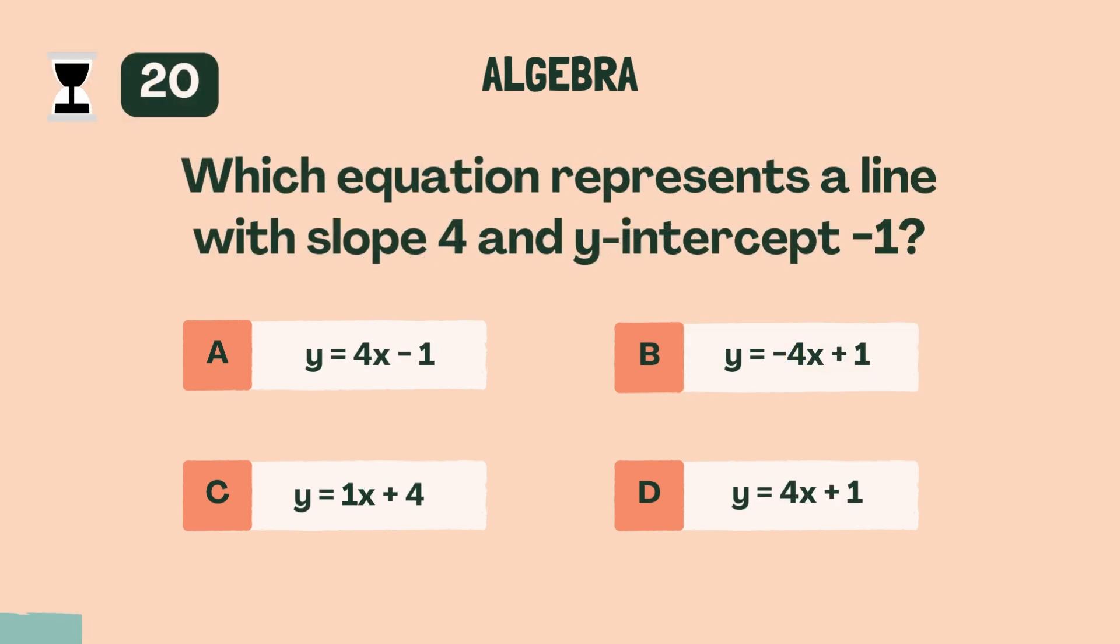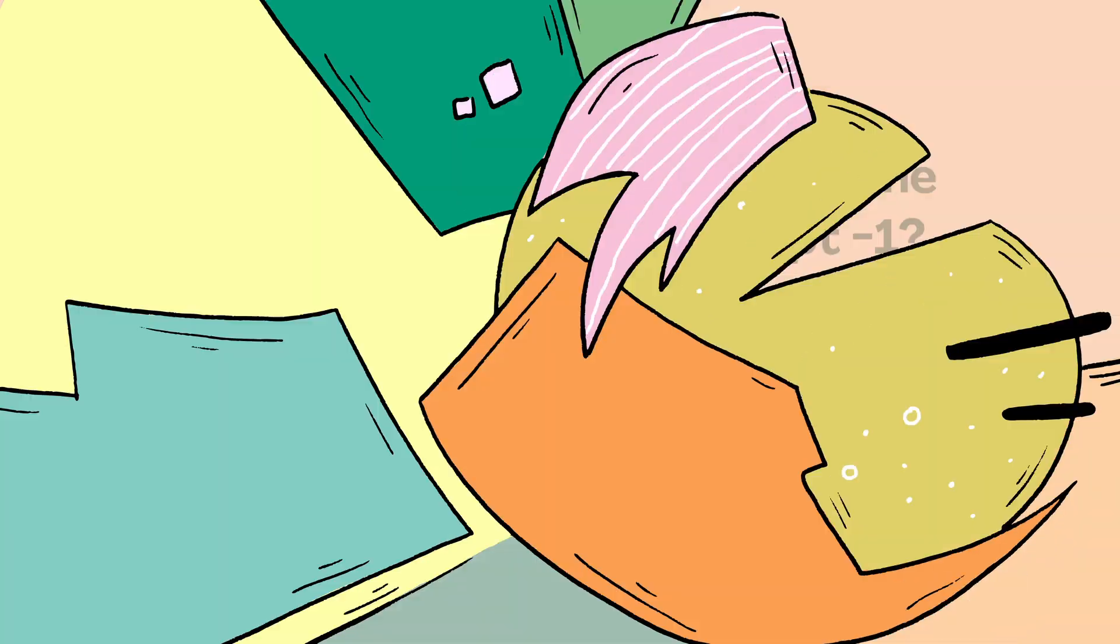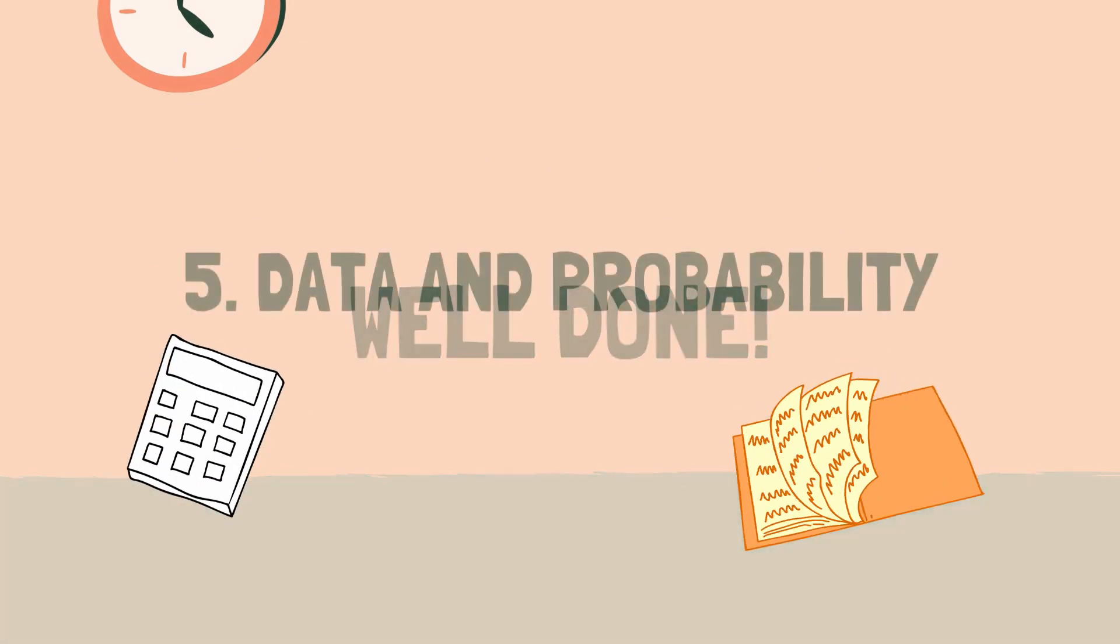Which equation represents a line with slope 4 and y-intercept negative 1? A, y equals 4x minus 1. Well done. Let's move on to the next category.